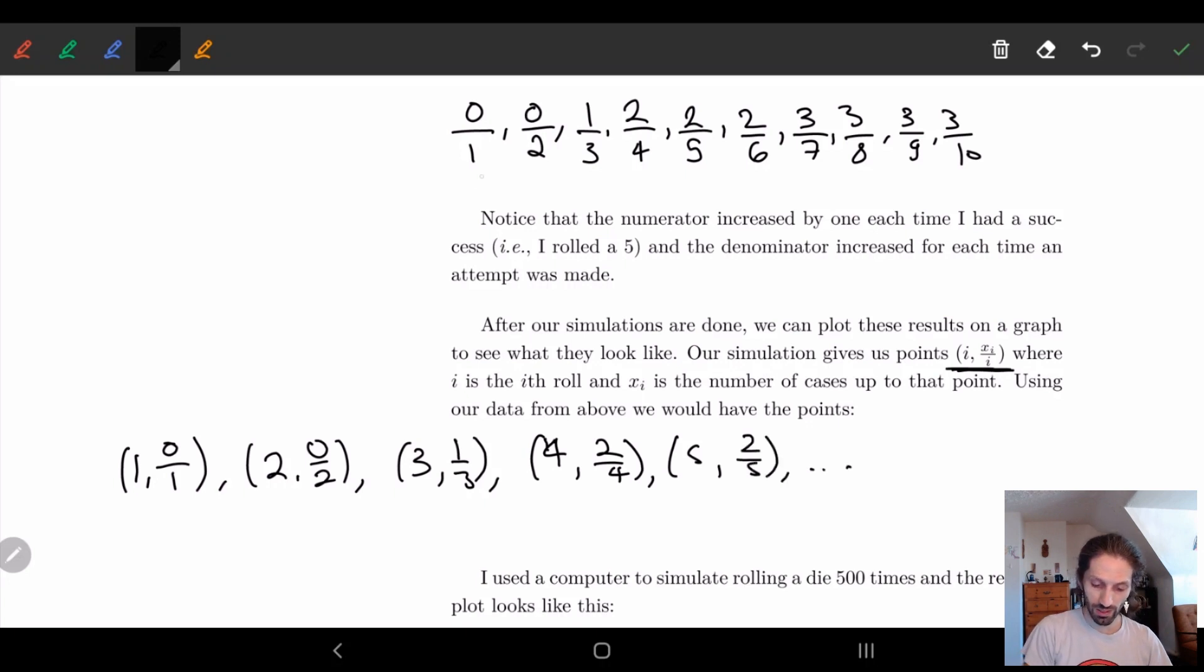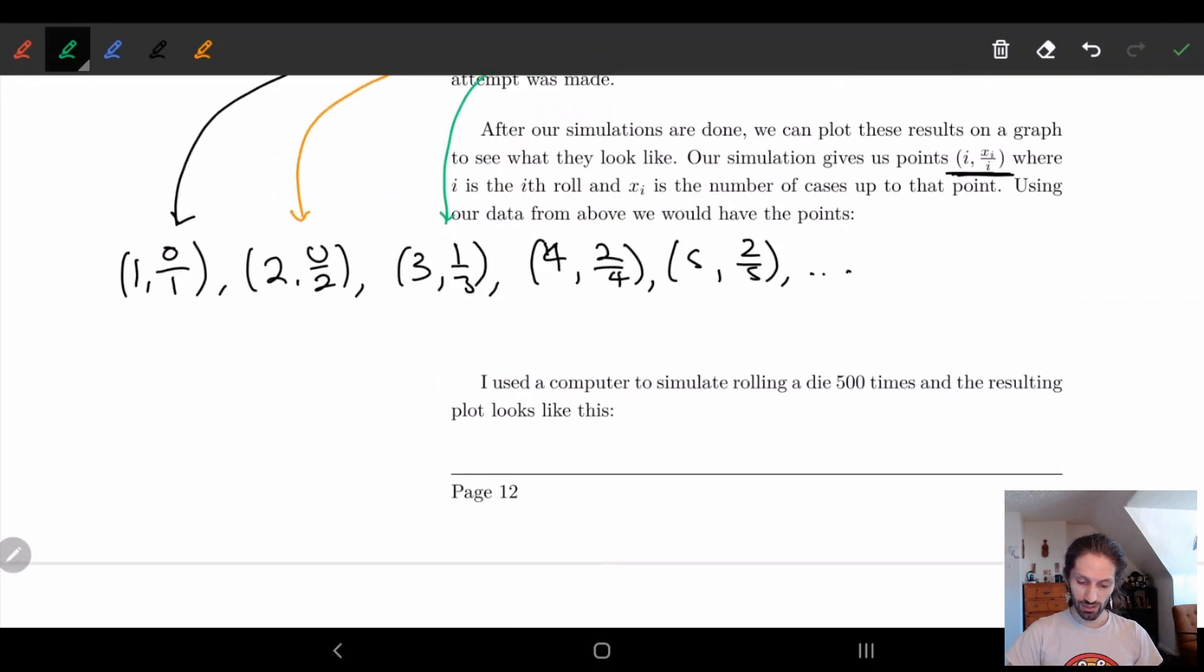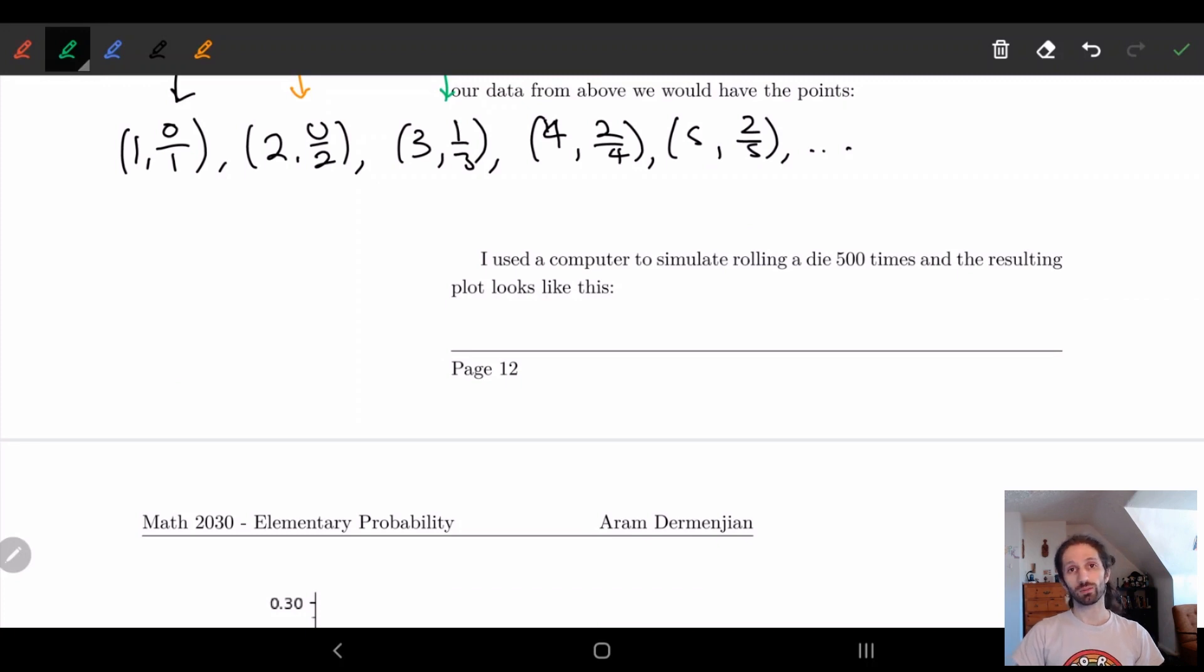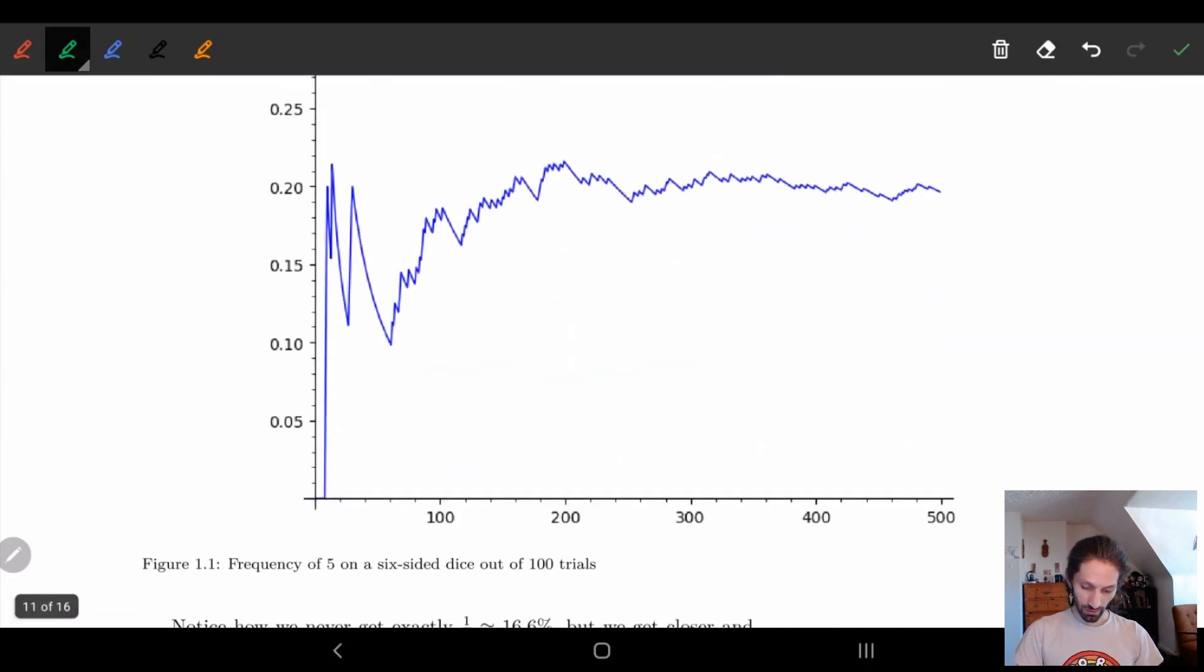So basically what I'm doing is I'm taking each one of my trials, each one of my relative frequencies, and I plug it in to that component. So zero over two, this is my second trial. This comes into the second relative frequency. My third trial is the third one, et cetera. So you can kind of see where these points are coming from. And then we can plot this. I'm not going to plot this here because like I said, it's a fake trial. But what I did is I actually took a computer and I said, okay, computer, roll this die 500 times and let me know how often the number five appears. And I ended up with this graph.